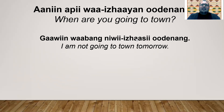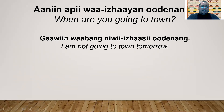Double-check with your elders in your community to make sure you are saying that correctly. For today, we're going to use the pattern: 'gawin' here and 'si' at the end — 'gawin...si' means it's negated. 'Wabang' — tomorrow. 'Niwi' — I will or want to. 'Ijaa' — she or he is going to a certain place. 'Odaanang' — talking about town. 'Gawin wabang niwi-ijaasi odaanang' — I'm not going to town tomorrow.